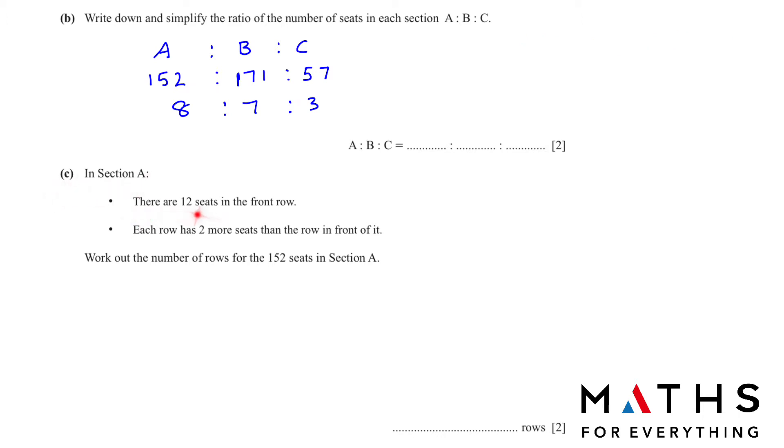In section A, there are 12 seats in the front row. Each row has 2 more seats than the row in front of it. Work out the number of rows for the 152 seats in section A. So our first row has 12 seats. The second row has 2 more, so 12 plus 2, 14. Now total number of seats is 12 plus 14 will give us 26. Then you add 2 more, so it is 16. Now 26 plus 16 will give us 42. So we keep adding like that till we get 152.